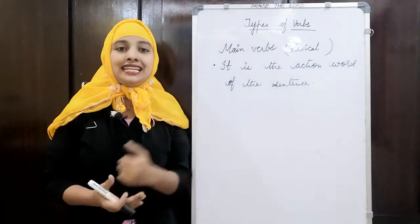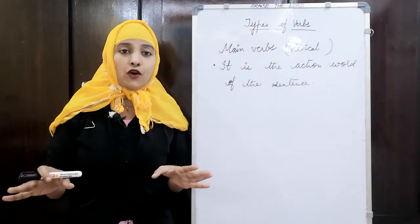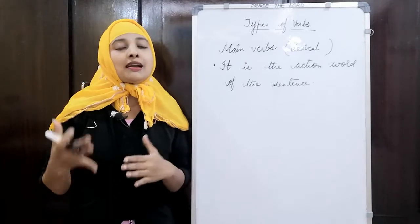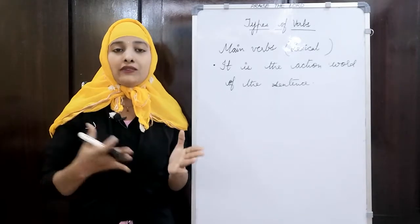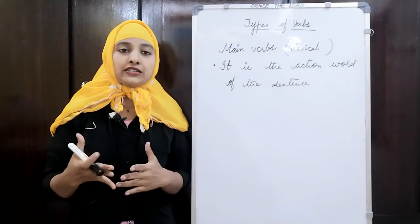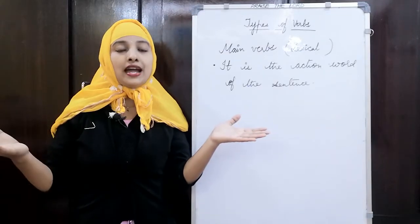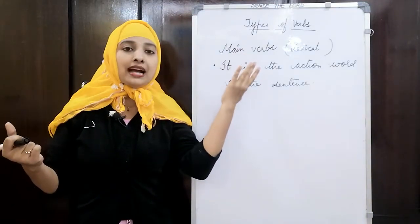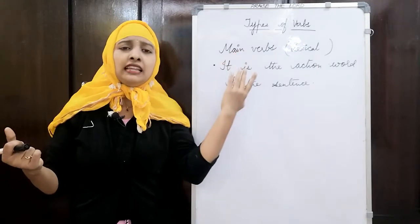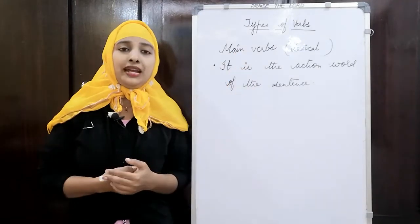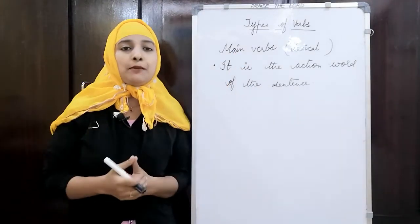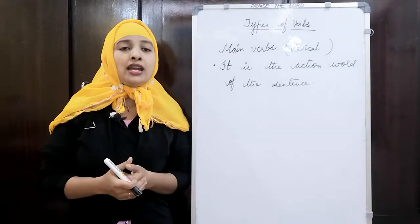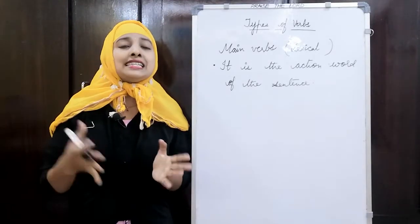We have seen the different types of verbs in a chart format. Today I am taking up main verbs, which are a part of finite verbs. We have seen that verbs are mainly classified as finite and non-finite. Under finite verbs you will come across helping verbs and main verbs. So today we will be discussing about main verbs. What are main verbs?